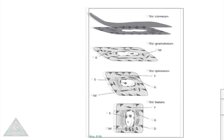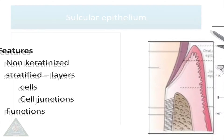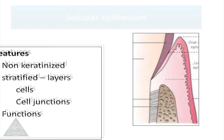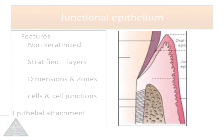On the other hand, sulcular epithelium is non-keratinized due to continuous bombardment of toxins from bacterial plaque. It is of three layers: stratum basale, stratum intermedium, and stratum superficiale, with semi-permeable junctions.